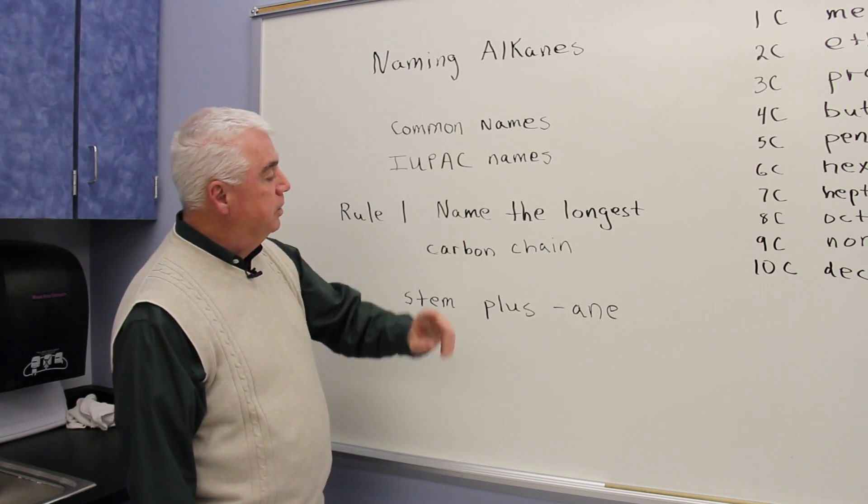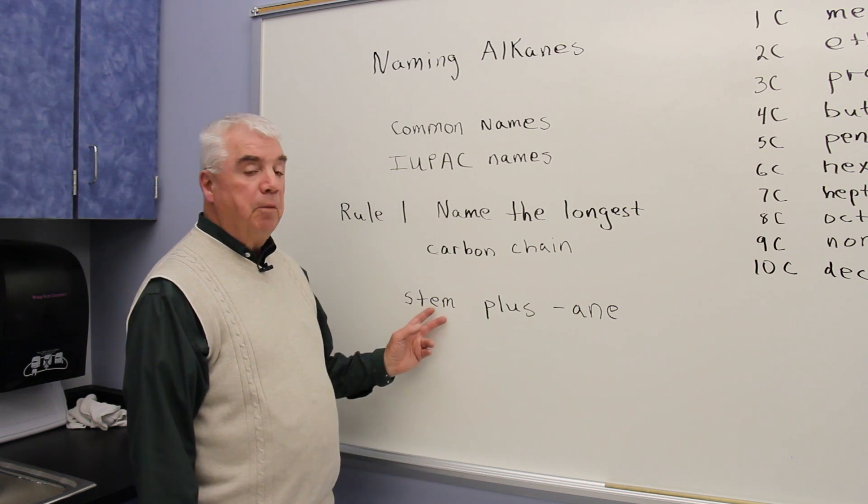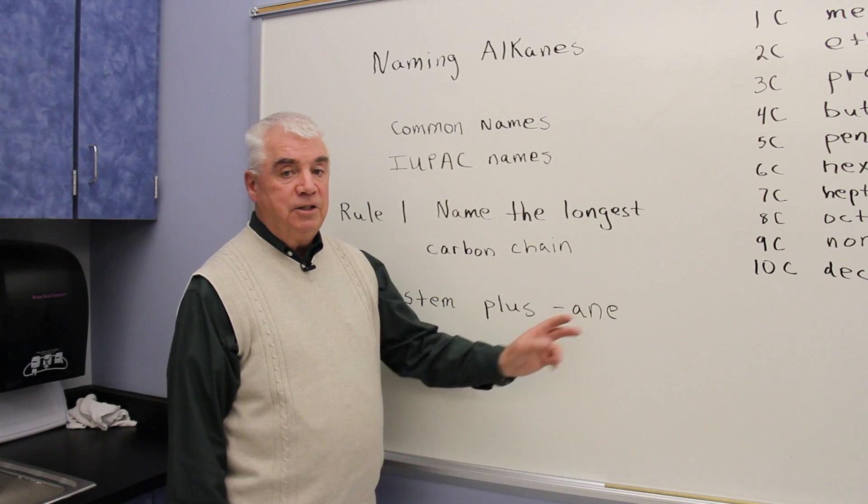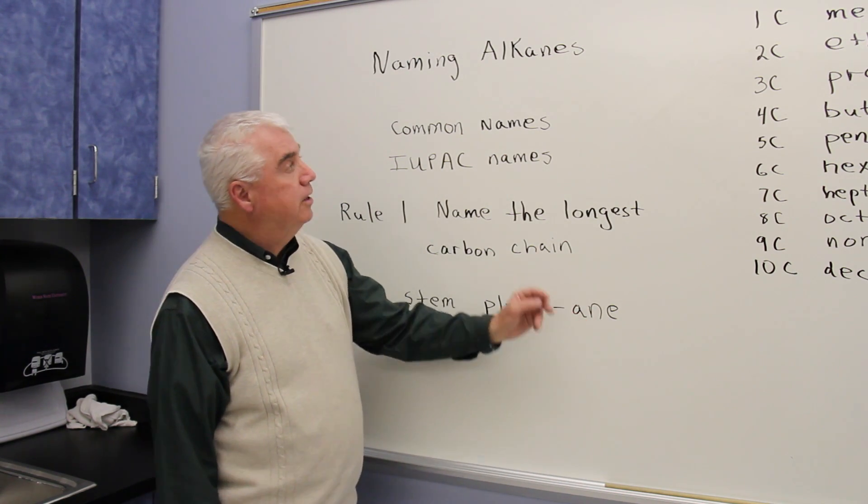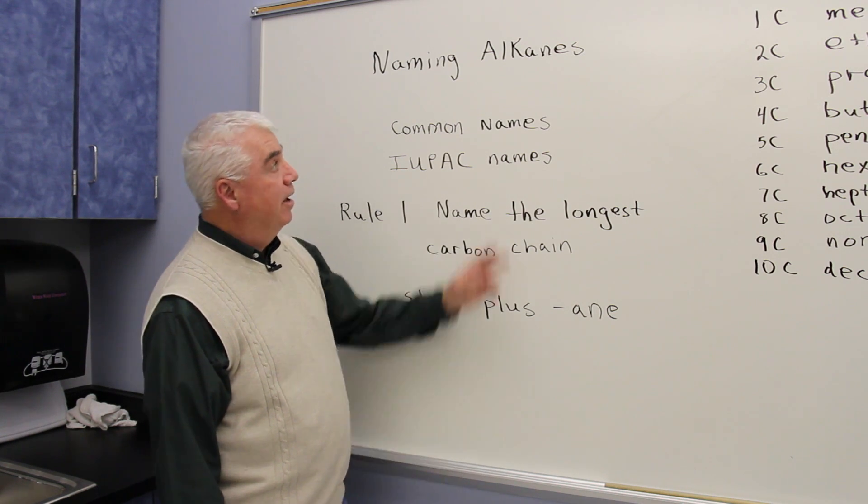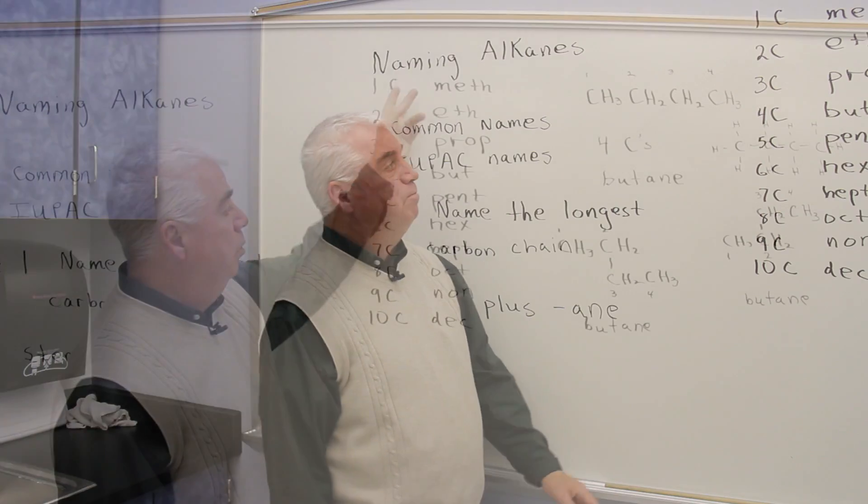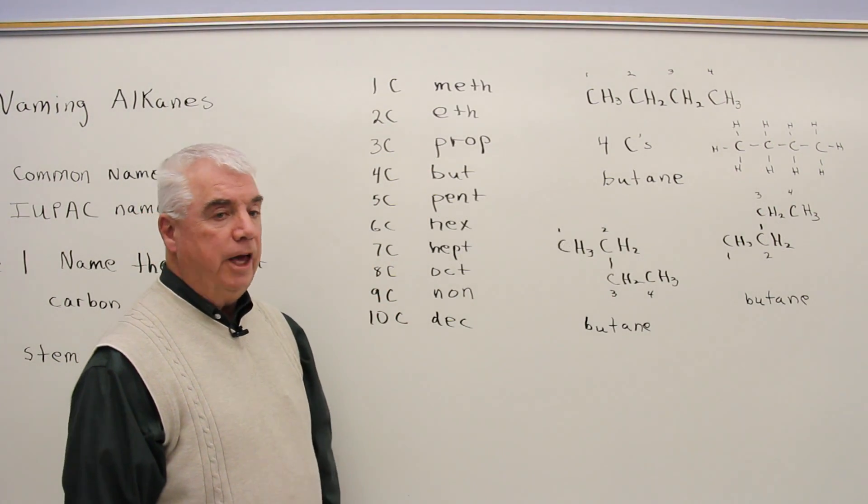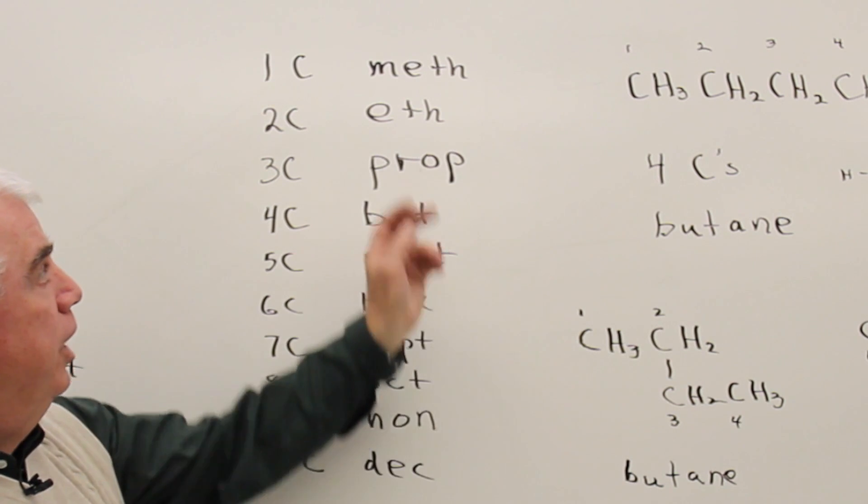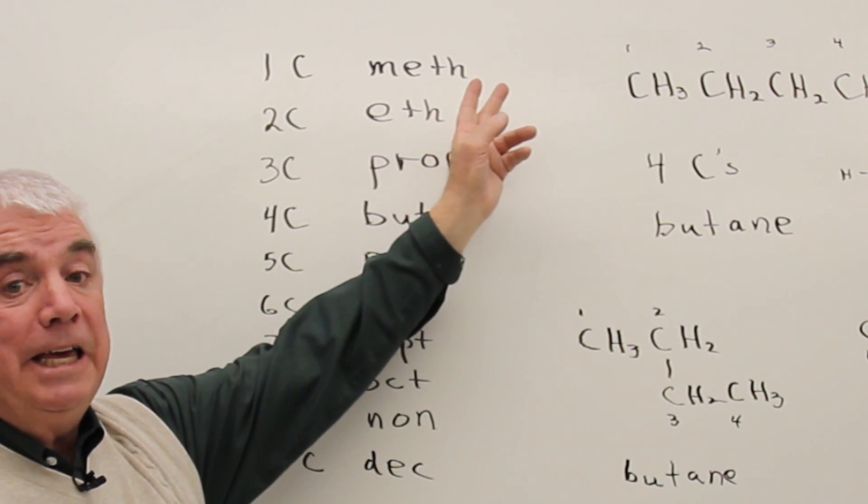Rule number one is to pick out the longest carbon chain. That becomes the stem of the word, and then we add A-N-E to the ending, and that A-N-E signifies that it belongs to the alkane family. These are the stems that we'd like you to know. For the first ten alkanes, if only one carbon is in the longest chain, we call it meth. And then, of course, if it had the A-N-E ending, it would be methane.